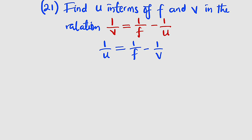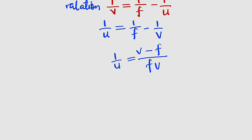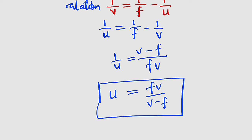Taking 1/v to the other side, it becomes negative 1/v. Simplifying the right hand side: multiply v by 1 giving v, minus f multiplied by 1 giving f, all divided by fv. This equals 1/u. Since we are looking for u, not 1/u, we take the reciprocal of both sides. Reciprocal of 1/u is u, and the other side becomes fv divided by v minus f. Hence u = fv/(v - f).